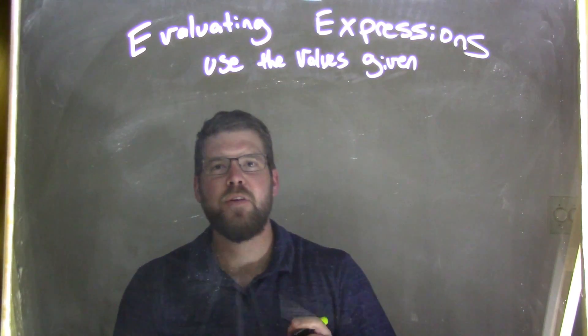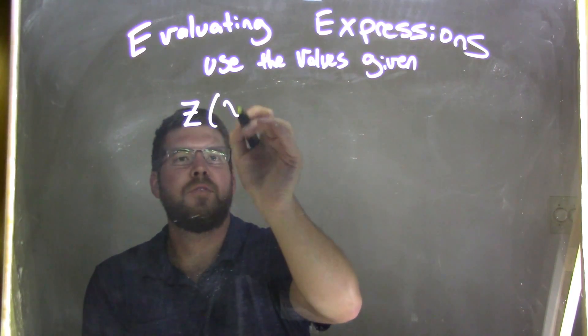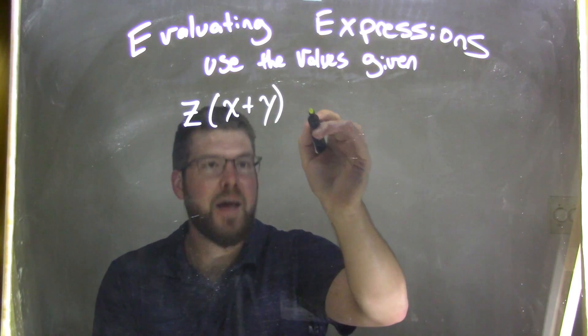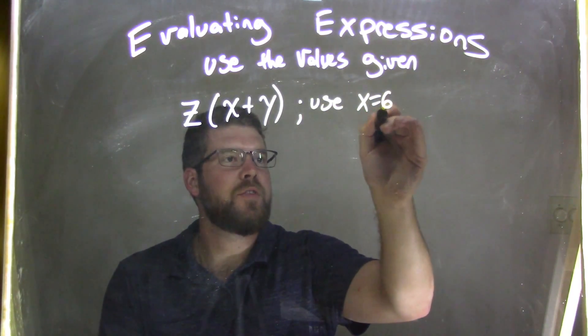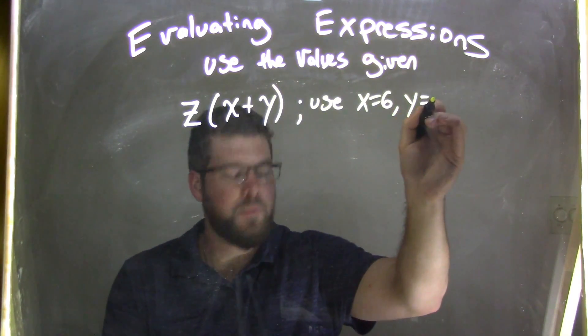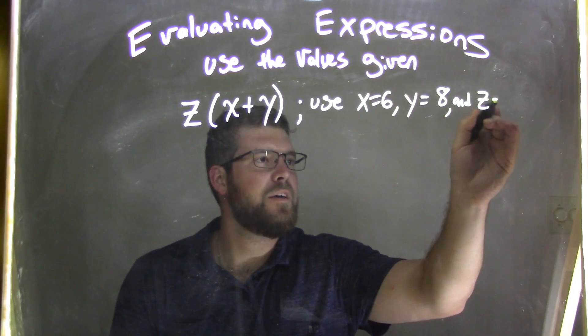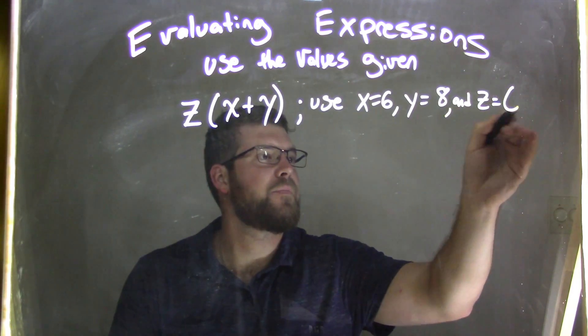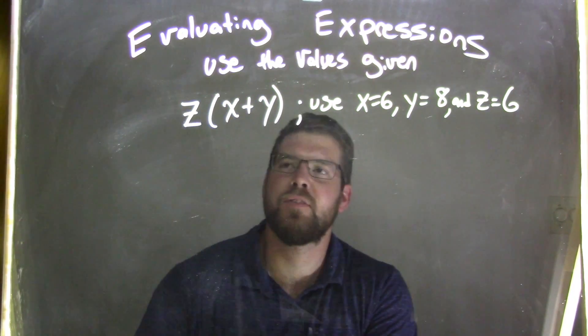So if I was given this expression, z times x plus y, and I need to use the variables: x equals 6, y equals 8, and z equals 6. So z and x equals 6, y equals 8. Three variables this time.